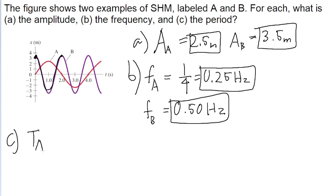The period for function A is 4 seconds. As we discussed a moment ago, one cycle is completed every 4 seconds.